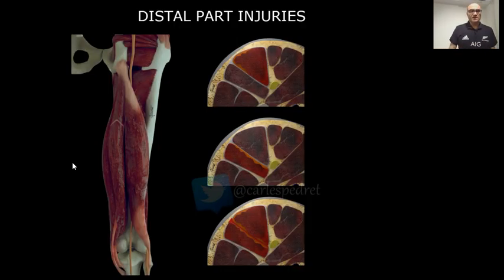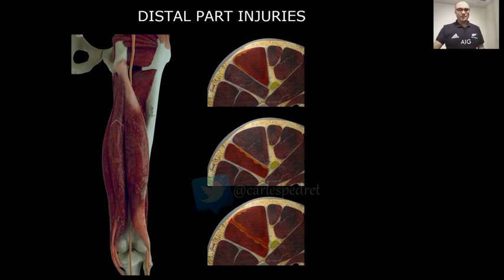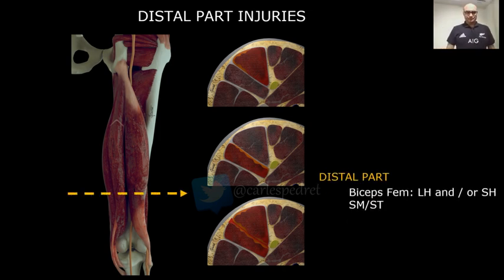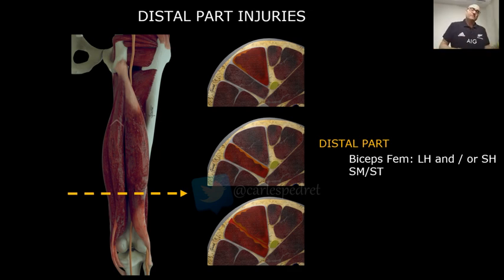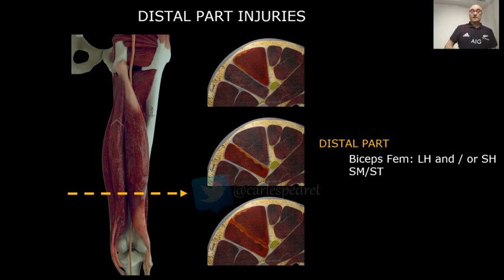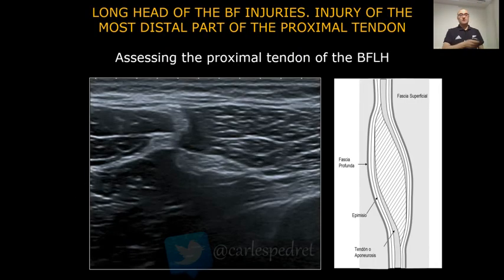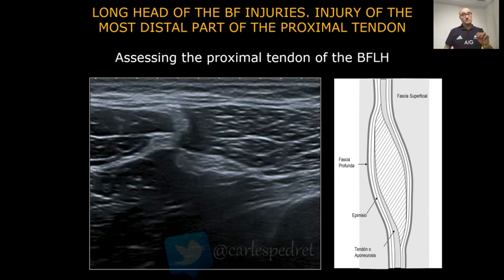We're going to see a little bit of this. We're talking about the distal part injuries. We are located in this region, and here we can see different injuries such as the biceps femoris long head and/or short head, and we can also find — very infrequent — semimembranosus or semitendinosus injury. But we are here to discuss about the long head of the biceps femoris injuries, specifically the injury of the most distal part of the proximal tendon.